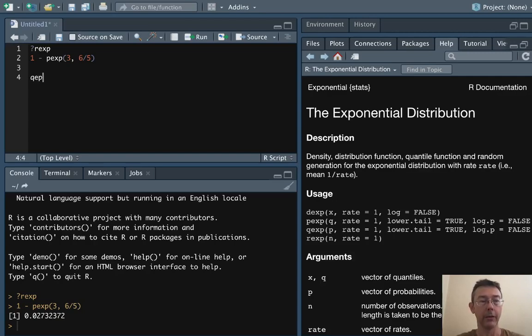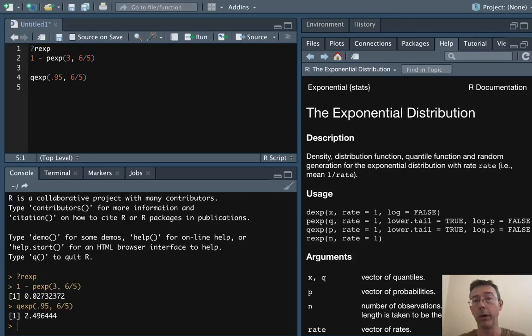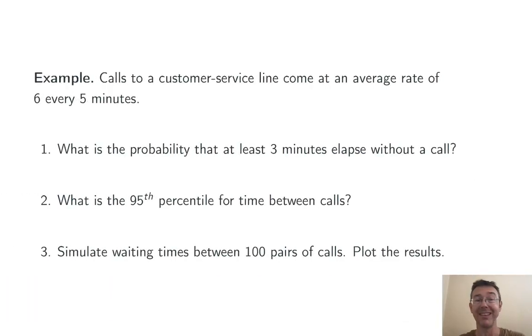So qexp, the percentile we're interested in, written as a percentage, 0.95. And again, the parameter that we've got in this case is 6/5. So it's about 2.5. So two and a half minutes between calls is the 95th percentile in this situation.